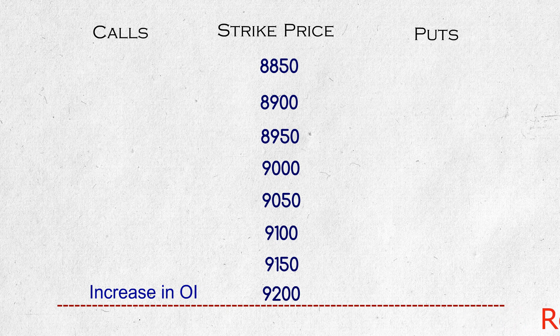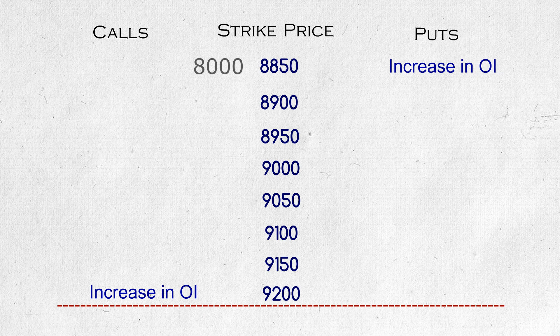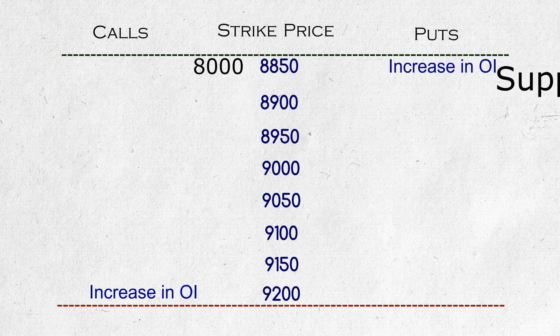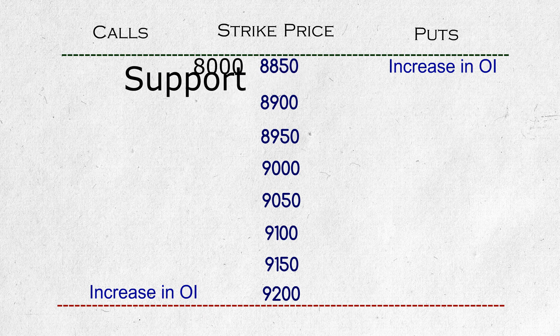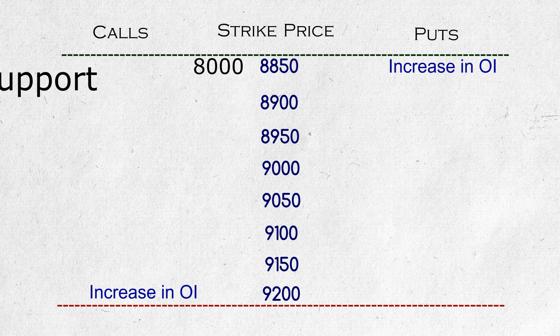Next, put options. Suppose Nifty is trading at 9,000 and there is a strong buildup in open interest at the 8,000 strike price put option expiring in 10 days. Put option buyers think Nifty will fall below 8,000 minus the premium price. Put option sellers think Nifty will not fall below 8,000 by expiry. Taking the seller as the right person, we can predict that Nifty will not fall below 8,000 — so this 8,000 is acting as a strong support. Take away: in put options, if there is a strong buildup in an out-of-the-money strike price, then that price has more probability of acting as a support.